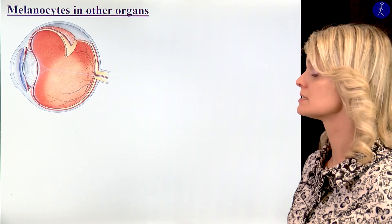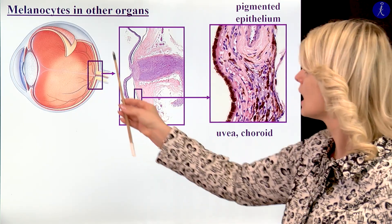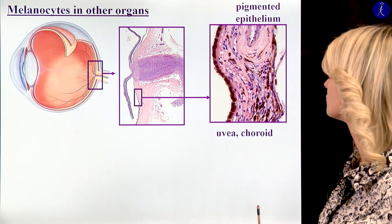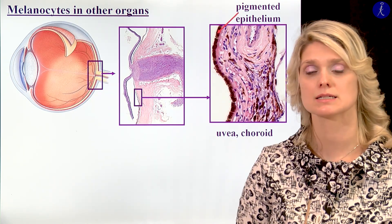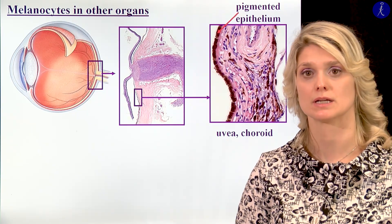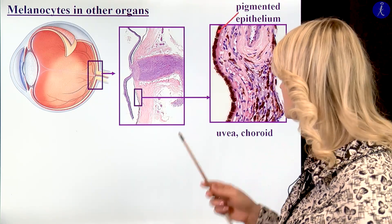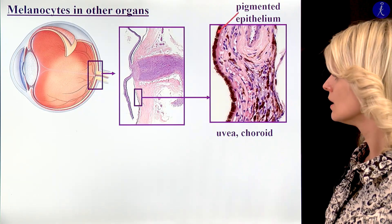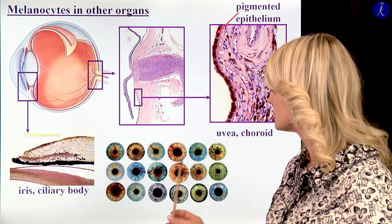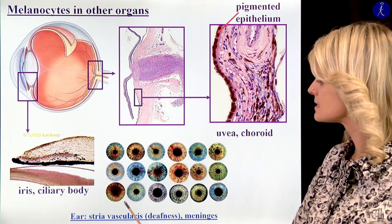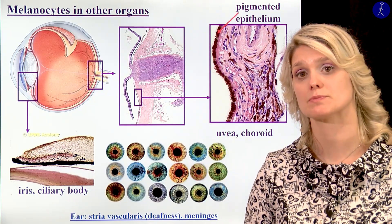We can find melanocytes in other organs too. For example, in the choroid layer of the eye bowl, we can find a lot of melanocytes. Here you can see one layer of pigmented epithelial cells — they do not produce melanin, they just store it. This is the outermost layer of the retina. Also, we can find a lot of melanocytes within the iris and ciliary body — that's why we have different eye colors. And it is interesting that we have melanocytes within the stria vascularis in the ear — if we have a problem with these pigmented cells, it could lead to deafness. And also on the meninges, we have a lot of melanocytes.